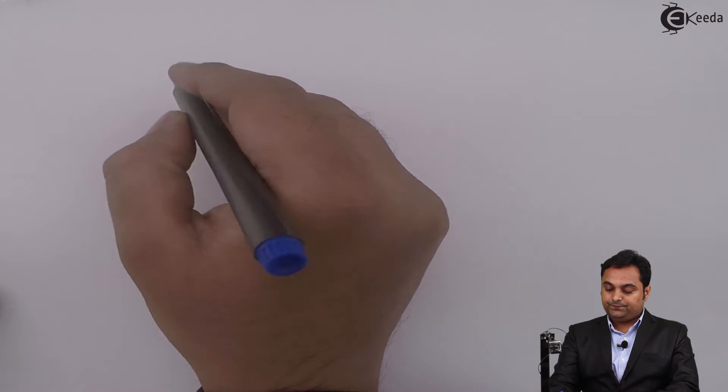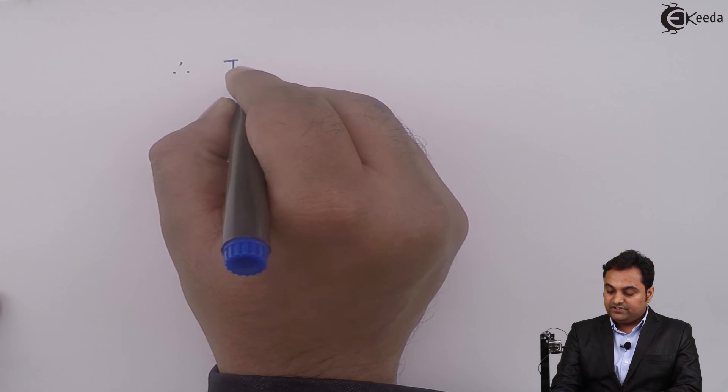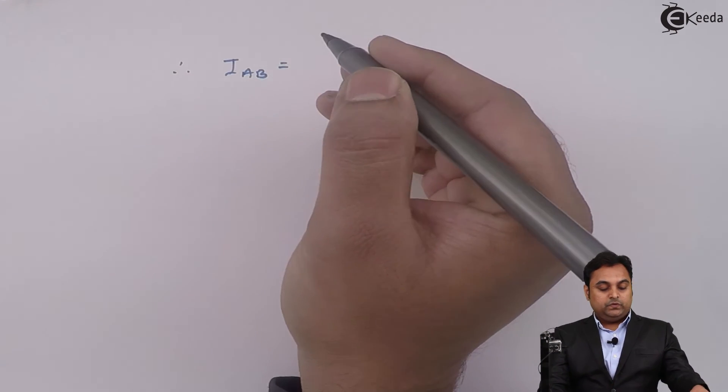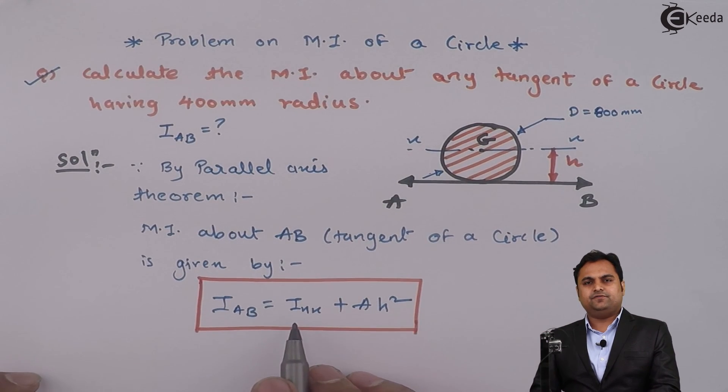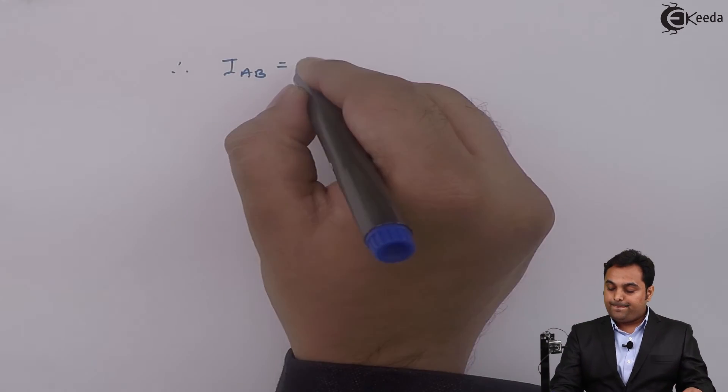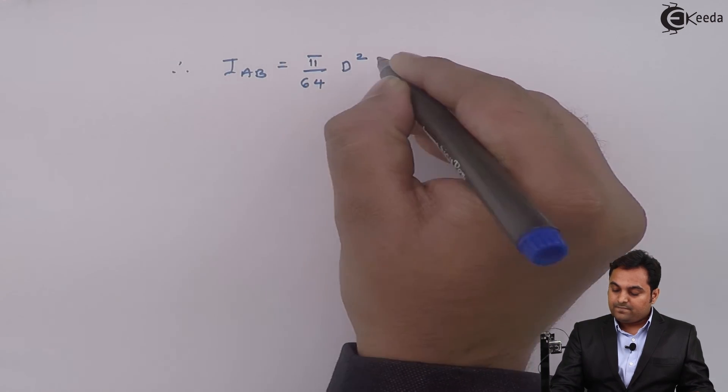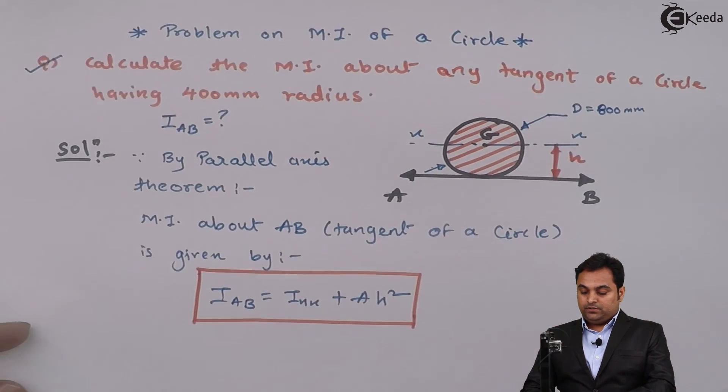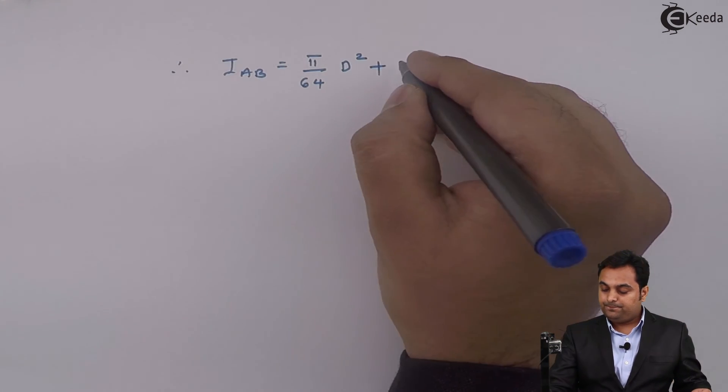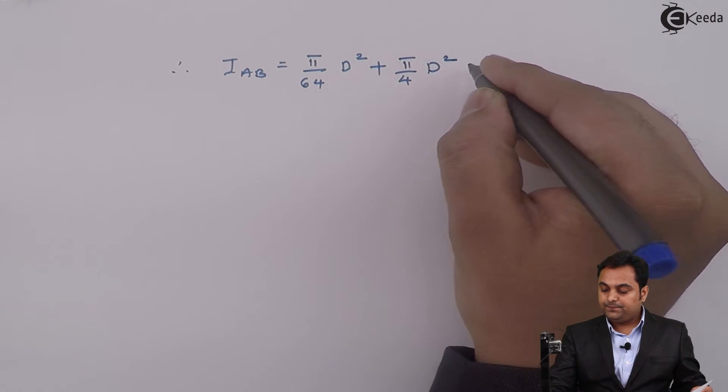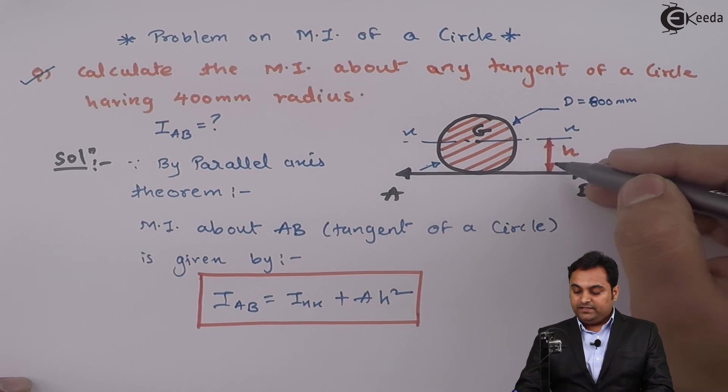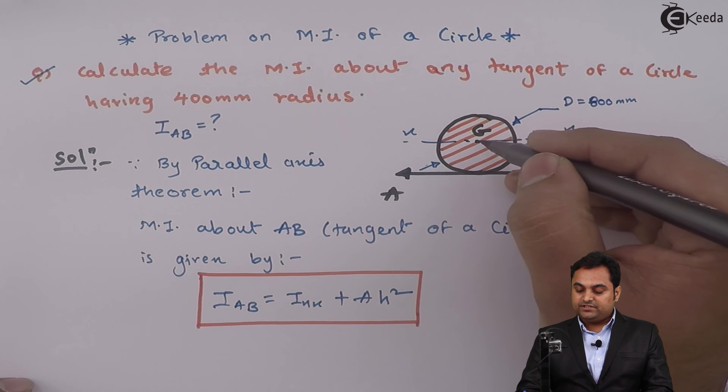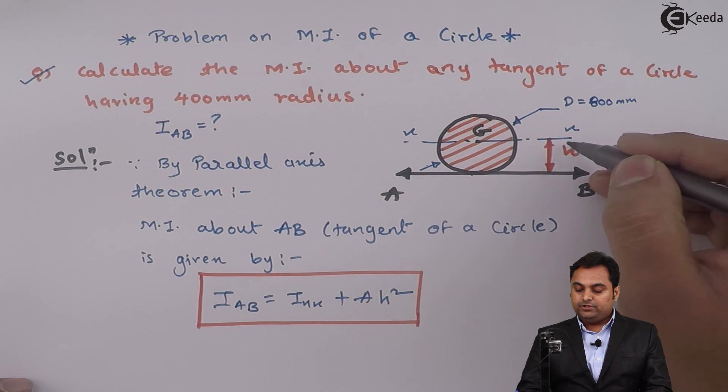Therefore, I_AB is equal to, we know that I_x-axis for a circle it is π/64 diameter to the 4th power, plus area, area of a circle π/4 d square into h. Now it is clearly seen that h is nothing but the distance from the center up to AB, so it is equal to the radius, so it is radius square.